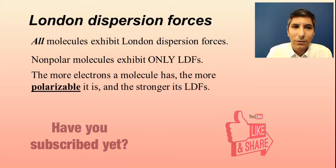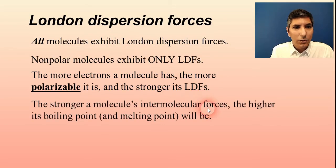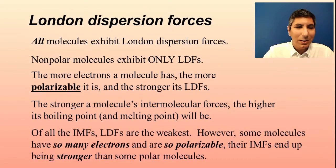Generally speaking, the more electrons that a molecule has, that means it's more polarizable. So more electrons, when they're all on one side, that's a stronger negative partial charge, making the other side stronger in its positive charge. And therefore, the more electrons you have, the stronger the London dispersion forces are going to be. And like I said, that's the case for all molecules. They're most prominent in nonpolar molecules, but they exist in all molecules. The stronger the molecule's intermolecular forces, the higher its boiling point, the higher its melting point is going to be. Generally speaking, we say that London dispersion forces are the weakest type of intermolecular force. However, some molecules actually have so many electrons and are so polarizable that their intermolecular forces end up being stronger than some polar molecules.